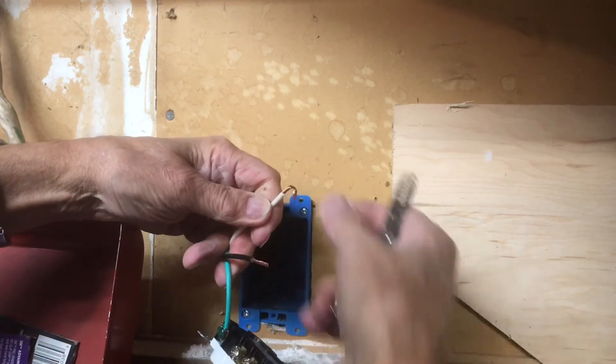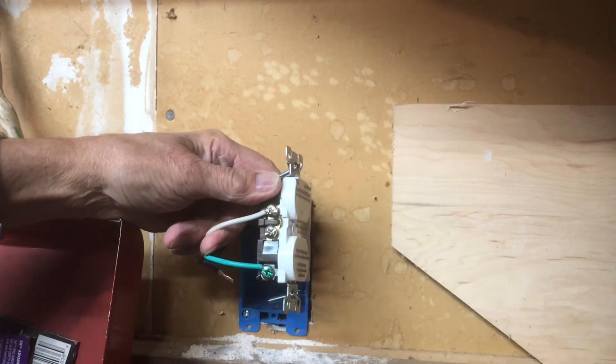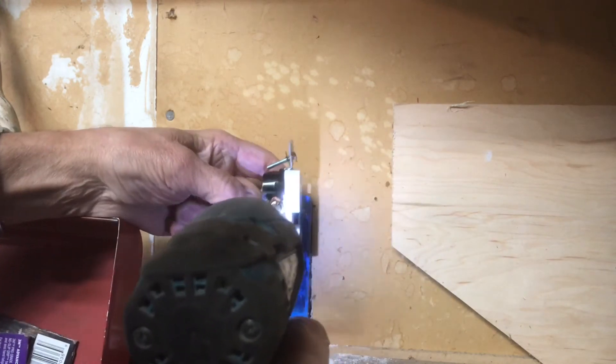Do the same thing on the white wire for the silver side. Bend it around, get a little curvature on it. Hook it on there and we'll tighten that up again.